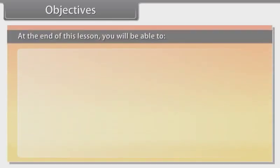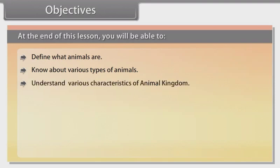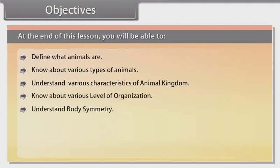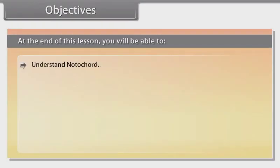Objectives: At the end of this lesson, you will be able to define what animals are, know about various types of animals, understand various characteristics of the animal kingdom, know about various levels of organization, understand body symmetry, understand diploblastic and triploblastic organization, know about coelom, understand segmentation, understand notochord, and know about various divisions of the animal kingdom.